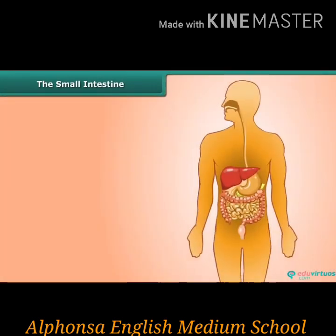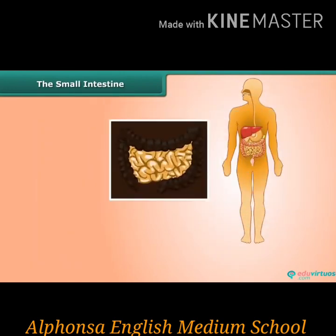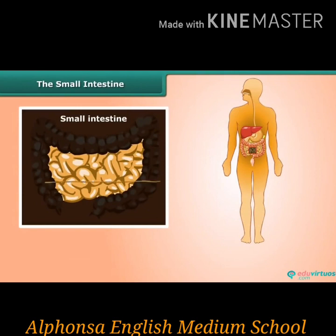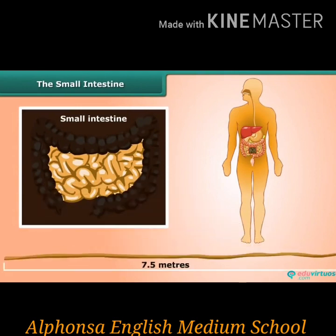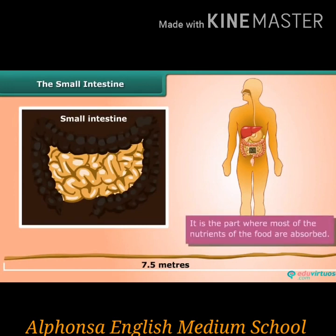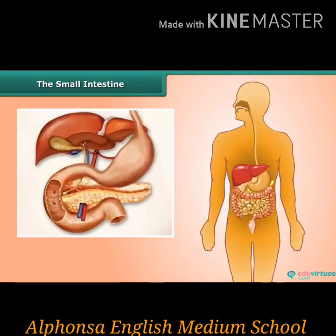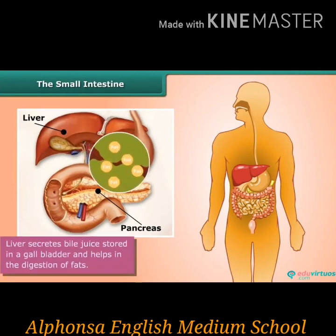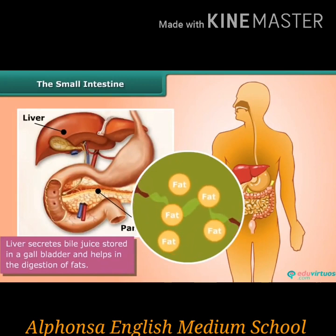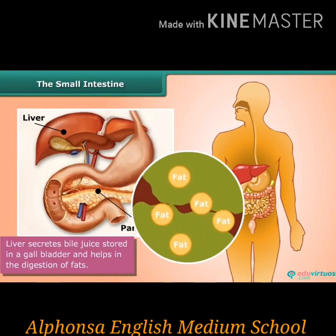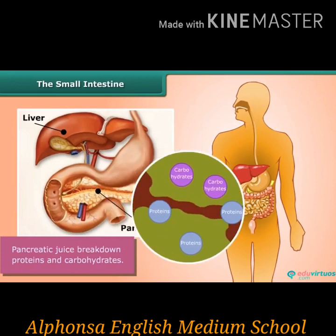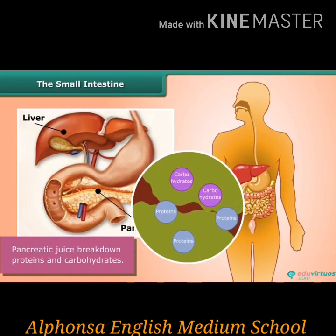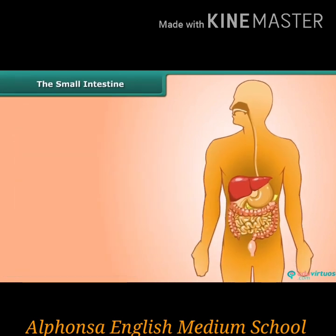The partially digested food in the stomach is called chyme. This food from the stomach is passed to the small intestine, which is a highly coiled structure. The first part of the small intestine helps in digestion and is almost 7.5 meters long. It receives secretion from two glands — the liver and the pancreas. Liver secretes bile juice, stored in the gallbladder, which helps in the digestion of fat. Pancreatic juice breaks down proteins and carbohydrates.